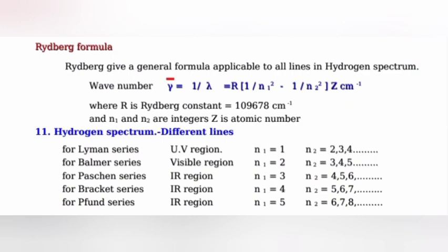Hydrogen spectrum different lines: For Lyman series, UV region, N1 equals 1, N2 equals 2, 3, 4. For Balmer series, visible region, N1 equals 2, N2 equals 3, 4, 5, etc. For Paschen series, IR region, N1 equals 3, N2 equals 4, 5, 6, etc. For Brackett series, IR region, N1 equals 4, N2 equals 5, 6, 7, etc. For Pfund series, IR region, N1 equals 5, N2 equals 6, 7, 8, etc.